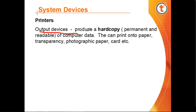Printers are output devices that produce a hard copy, which is a permanent and readable form of computer data. A soft copy means the document exists within the computer itself. A hard copy is something you can keep with you — like a printed page from a printer or xerox machine. Printers can print onto paper, transparency sheets, photographic paper, card, and more.